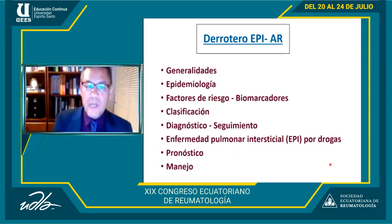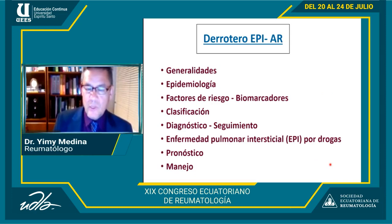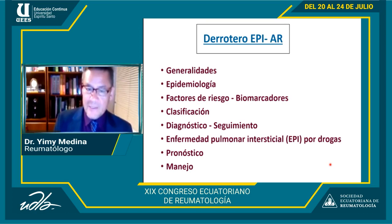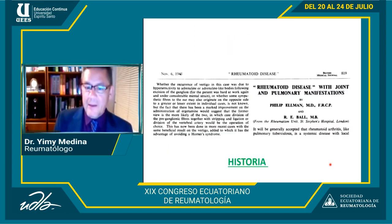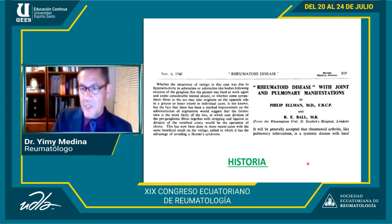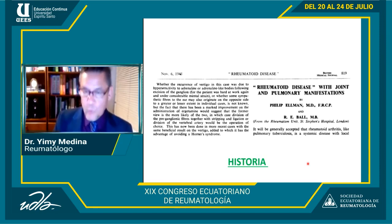Este es el derrotero para la charla: generalidades, epidemiología, factores de riesgo y biomarcadores, clasificación, diagnóstico y seguimiento, enfermedad pulmonar intersticial por drogas, pronóstico y manejo. Es un tema bastante complicado que, a pesar de que desde 1948 se definió el primer caso por Philip Ellman en el British Medical Journal, aún tenemos mucha incertidumbre sobre el tratamiento.